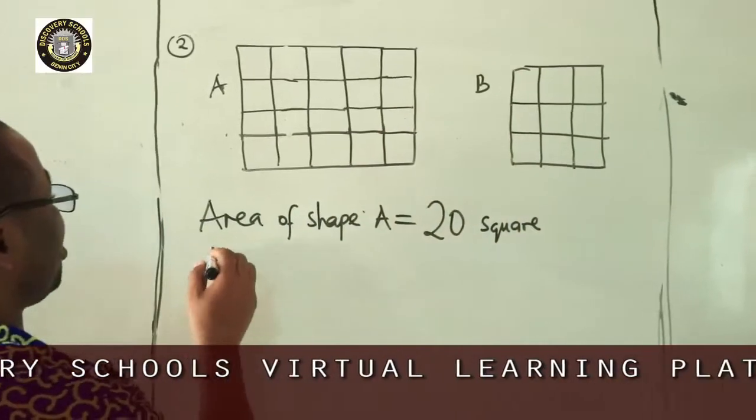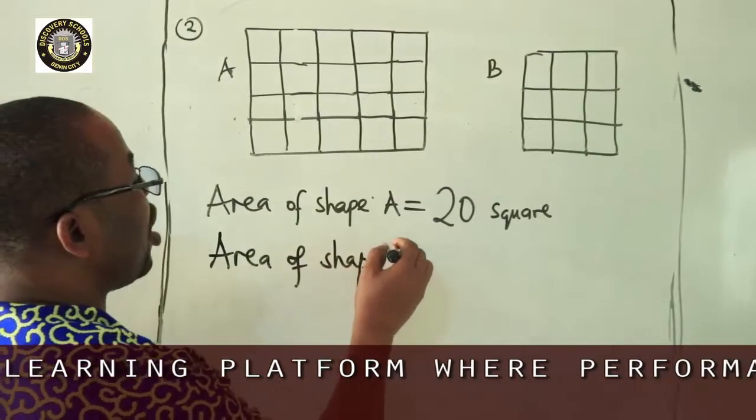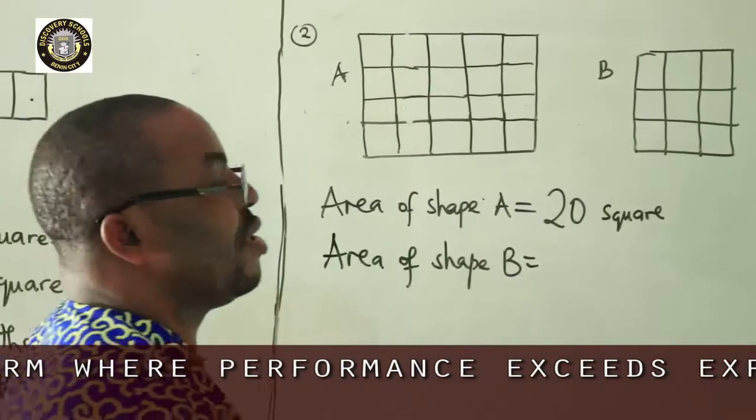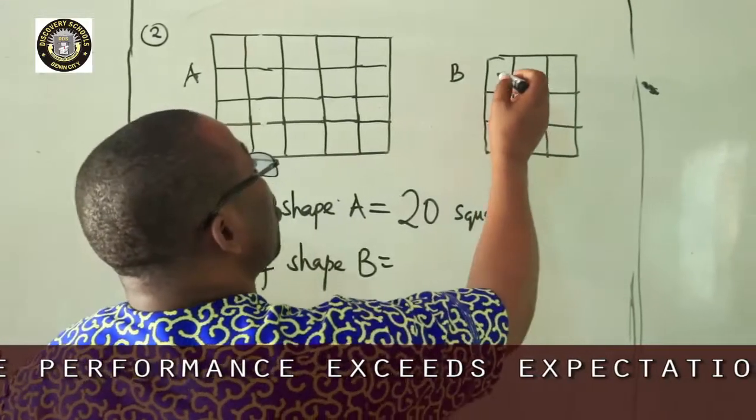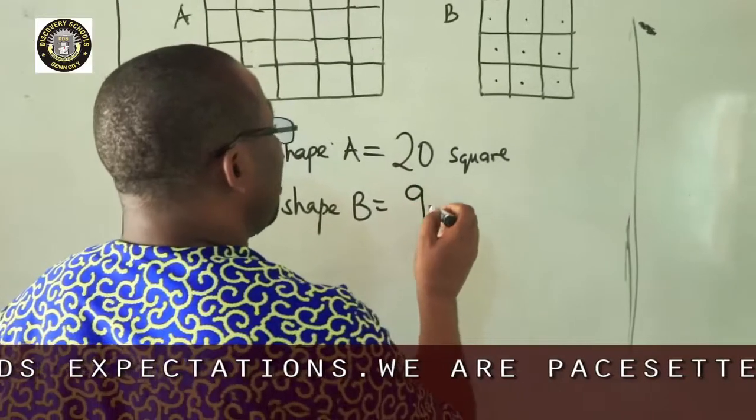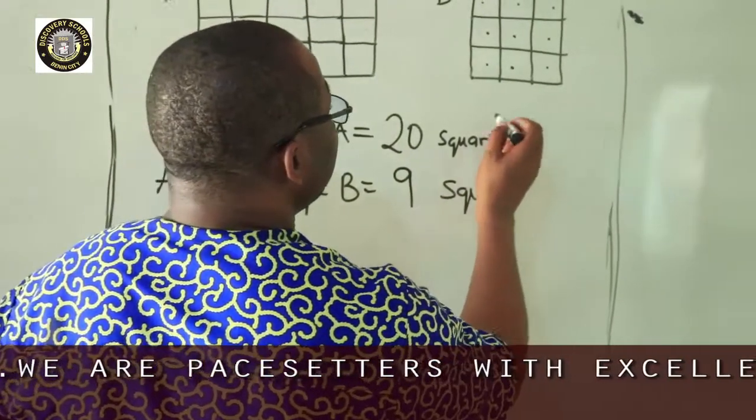What is the area of shape B? Area of shape B. Like I told you, you can count the number of squares inside the box or shape to know the area. So the area of shape B is what? 1, 2, 3, 4, 5, 6, 7, 8, 9. The area of shape B is what? 9 squares. 9 squares.